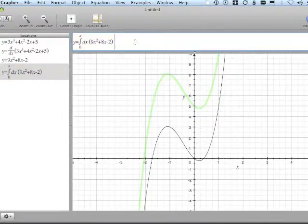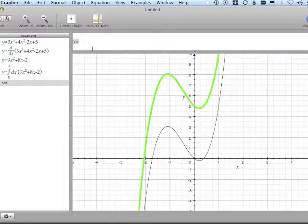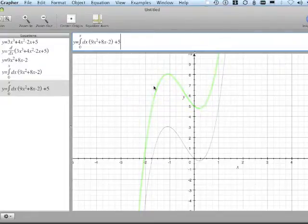So to get it to match up, I'm going to again copy this completely, choose to add a new equation, paste it, and then simply remember that the constant at the back of my equation was +5, and when I graph that...